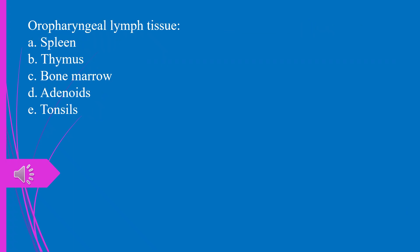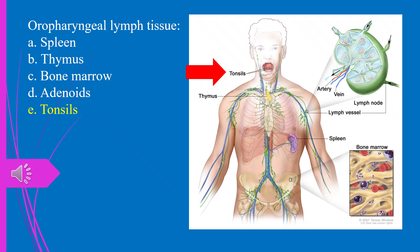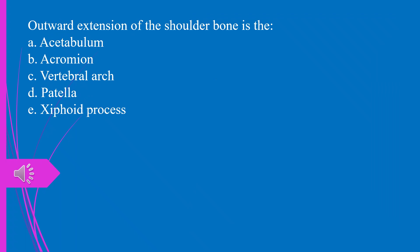Question 10. Oropharyngeal lymph tissue: a) spleen, b) thymus, c) bone marrow, d) adenoids, e) tonsils. The answer is e, tonsils.